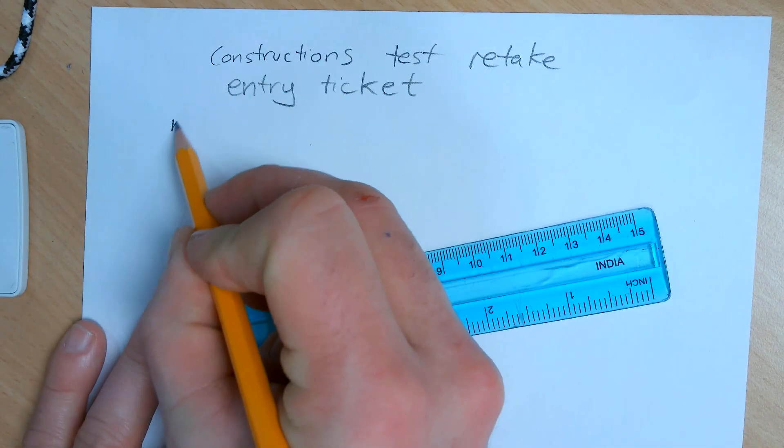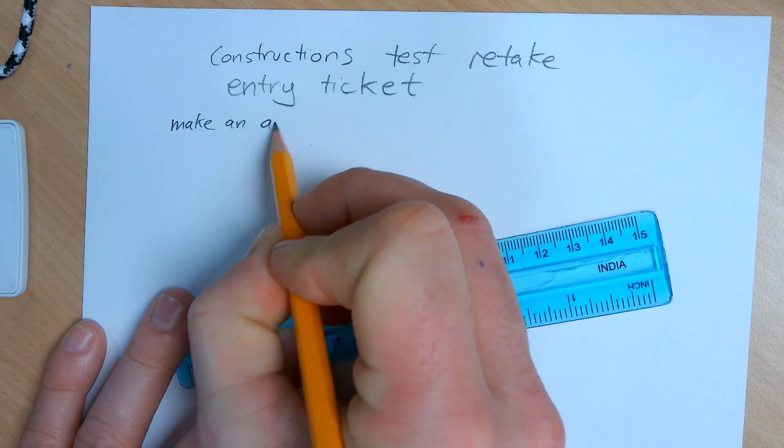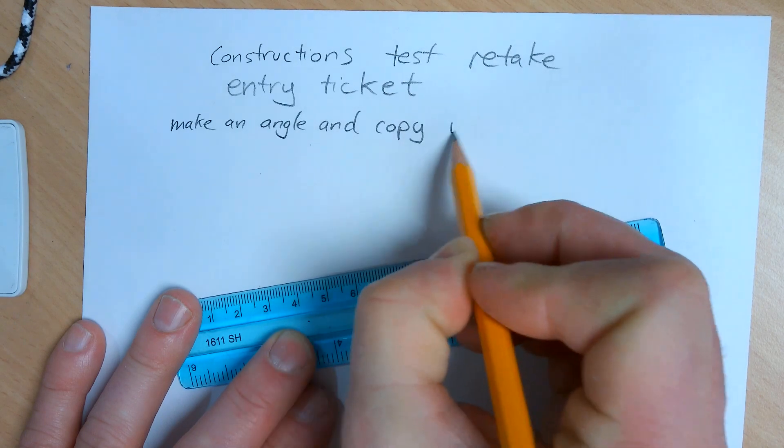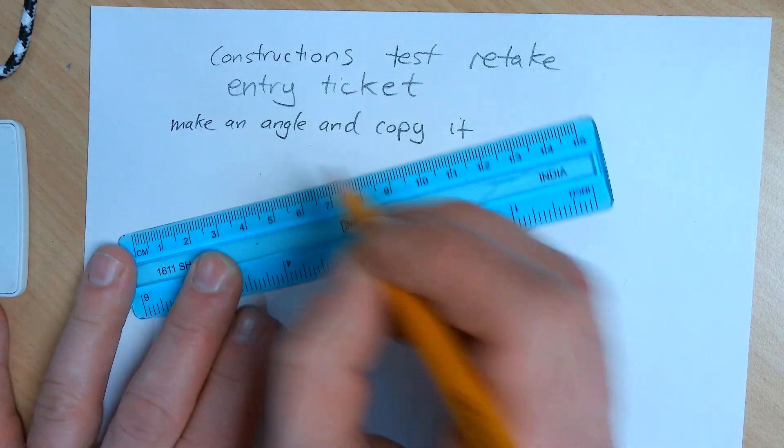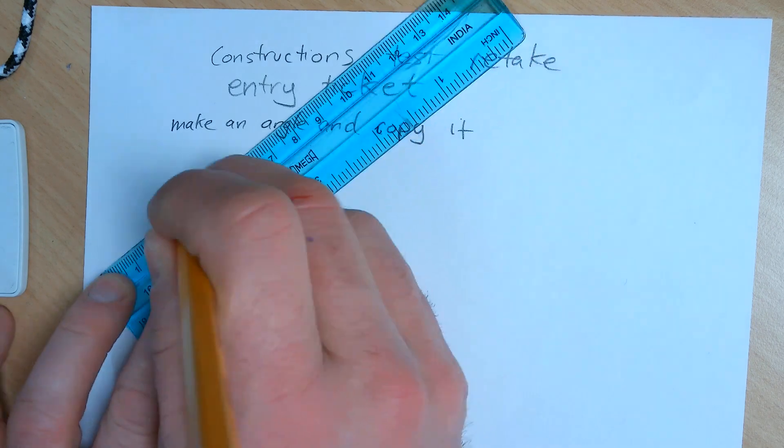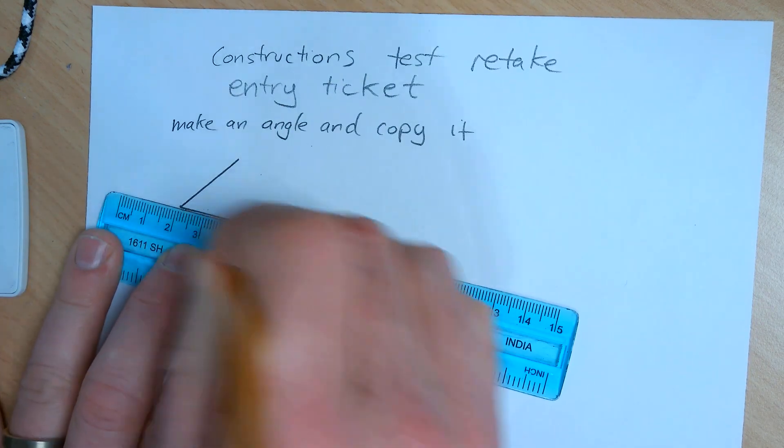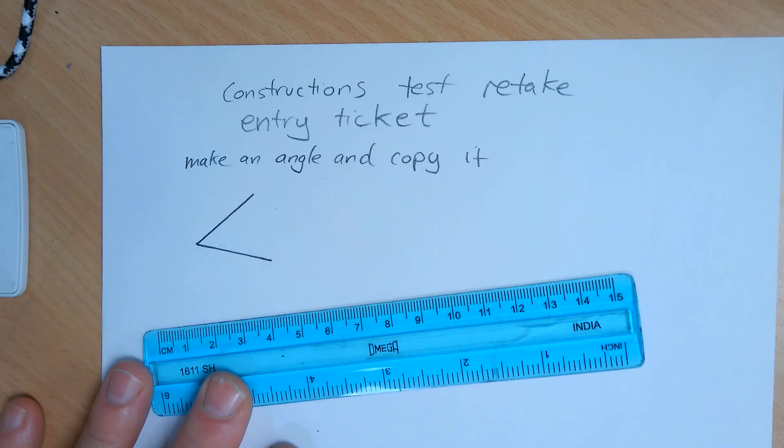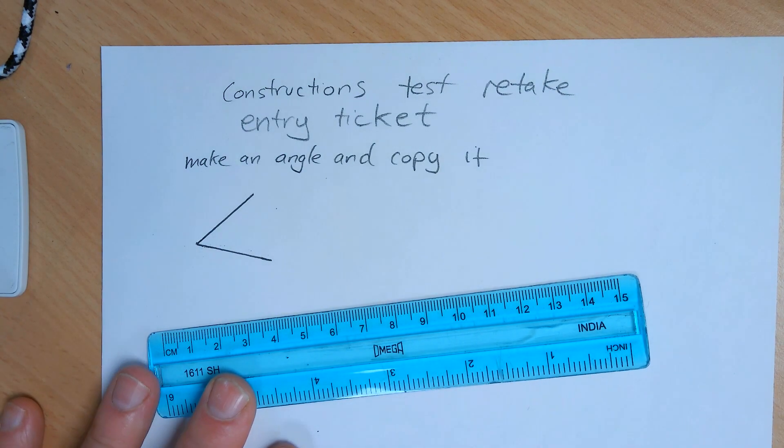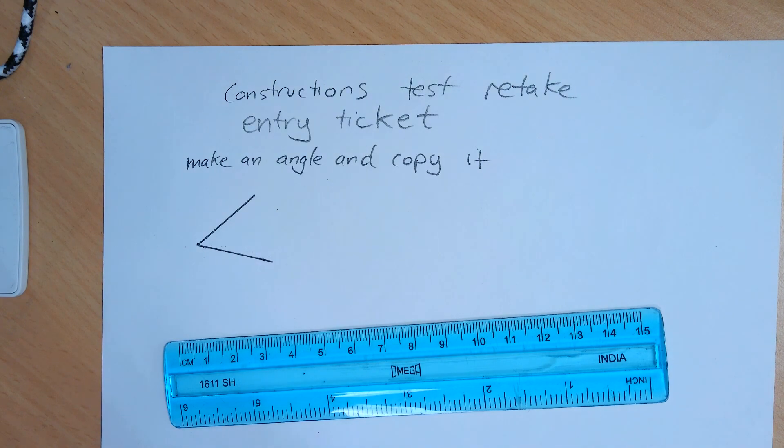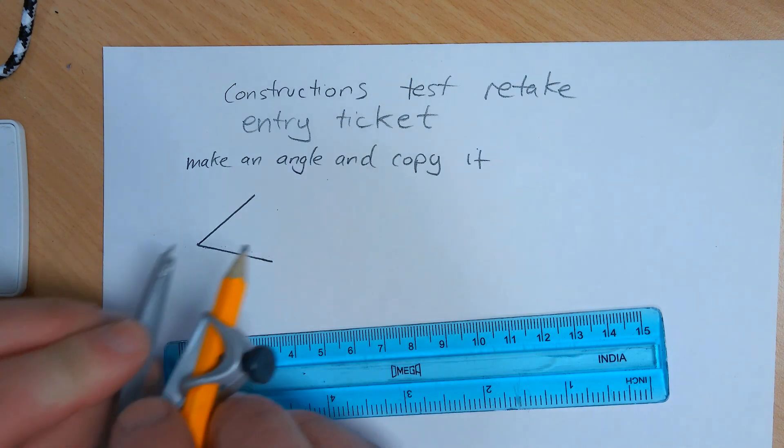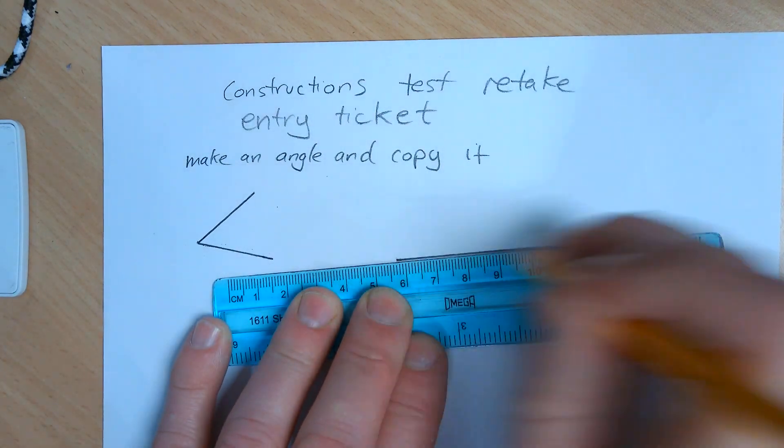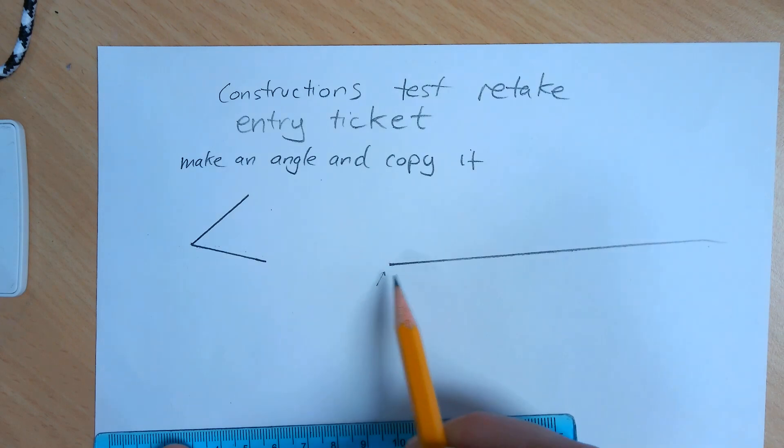The first one is make an angle and copy it. For that you will just make any angle, it doesn't matter what it is. On the test you will have an angle, but for this practice sampling paper you need to make your own angle and then we will now copy that angle.